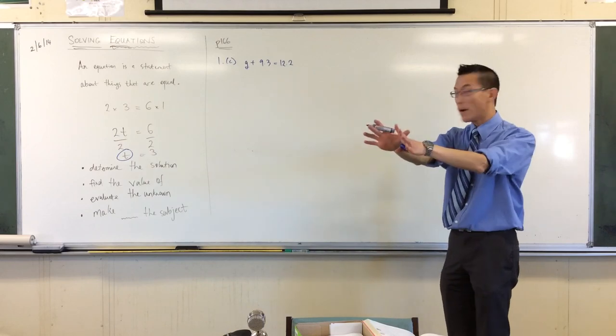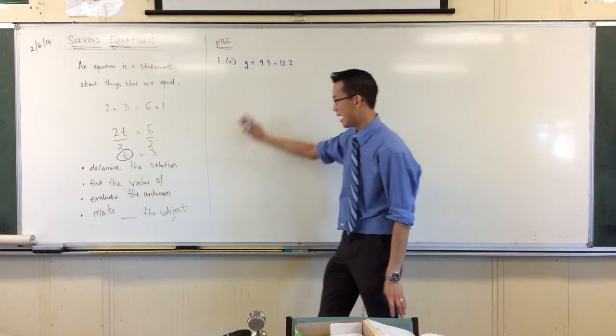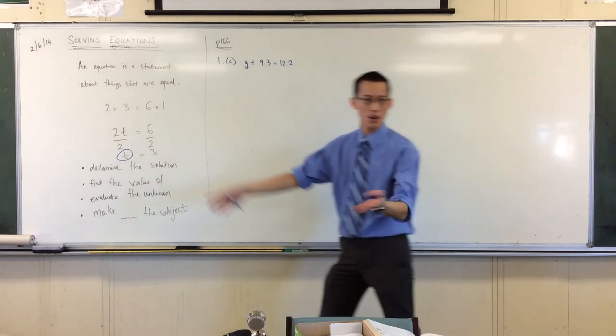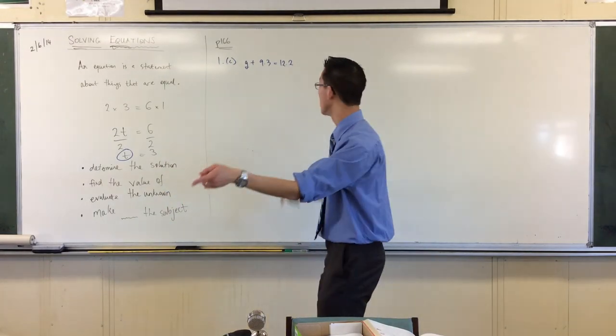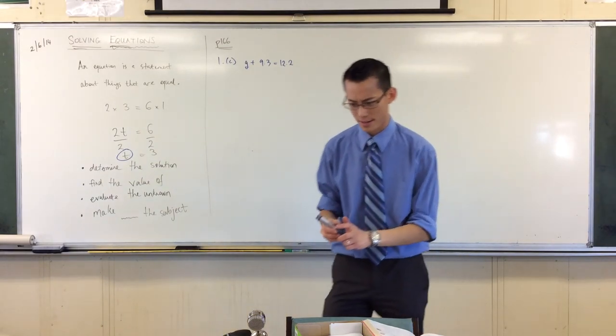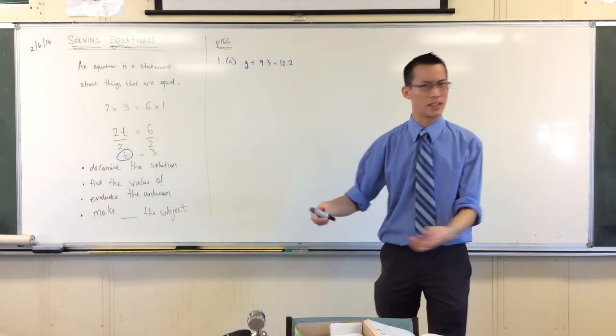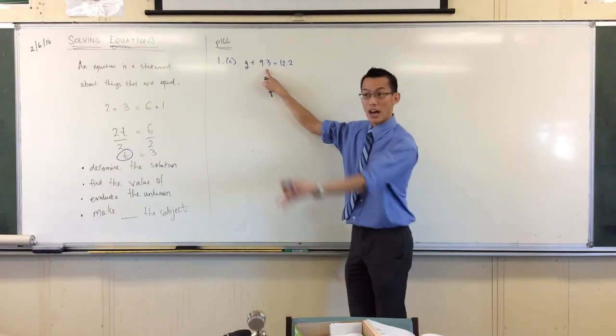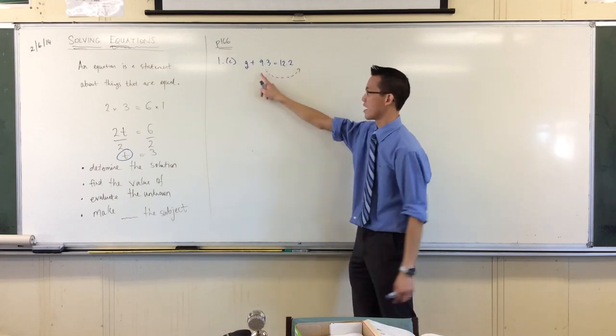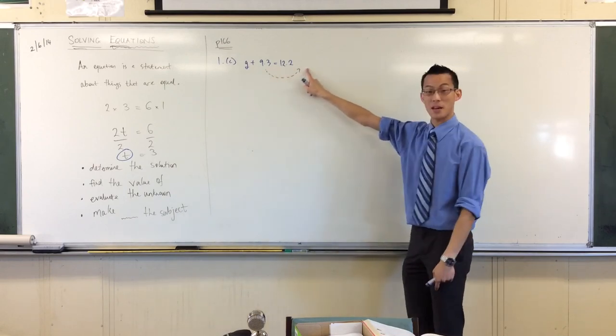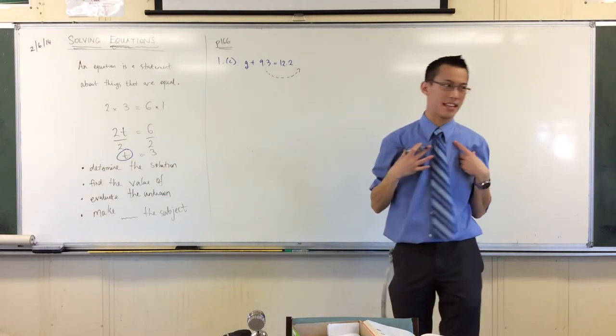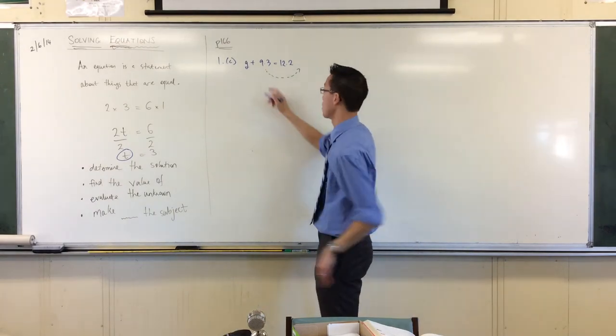All right, so we're always after some kind of operation we can do to both sides to get us closer towards the solution, the value of the unknown. So a good suggestion is to subtract 9.3 from both sides. You might have also heard this sometimes, teachers will explain it with the language of taking that 9.3 and taking it over to the other side, and when it crosses the equal sign it's a positive over here, it becomes a negative over there. Whichever way fits the way that you think, that's fine. I like to say subtract 9.3 from both sides.